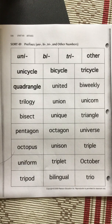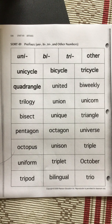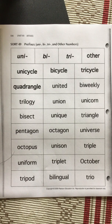Hi everyone! In this video we're going to be looking at the prefixes uni, bi, tri, and other. When they say other, they don't mean oddball in this case. What they mean is other words that have prefixes that have different meanings. I'll get to that in just a minute.